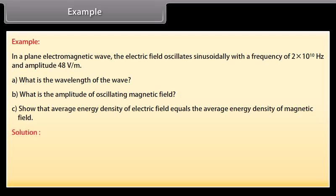Let's see the solution. Given values are nu which is equal to 2 into 10 raised to the power 10 Hertz, E0 equals 48 volt per meter. We know that lambda is equal to C upon nu. By putting and calculating the values, we get wavelength of the wave which is equal to 1.5 into 10 raised to the power minus 2 meter.